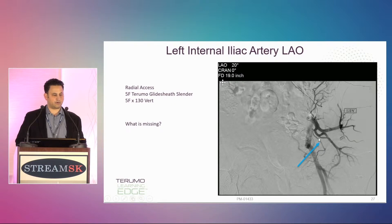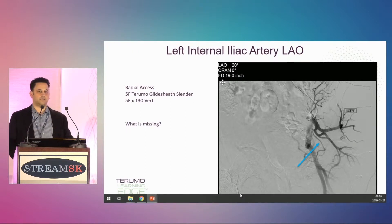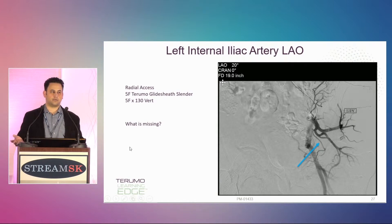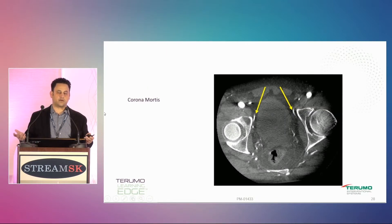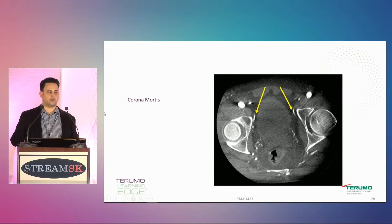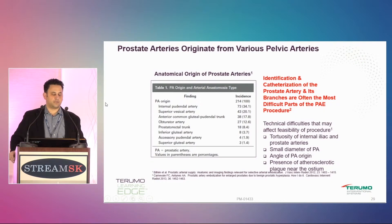You can see the prostate artery coming off here from a VP trunk — superior vesicle, prostate, and the internal pudendal artery. There is some reflux into the external iliac artery. As a review from yesterday: what's missing on this picture? The obturator artery is missing — this is a lot more common than I ever thought. You can see the corona mortis here on both sides.